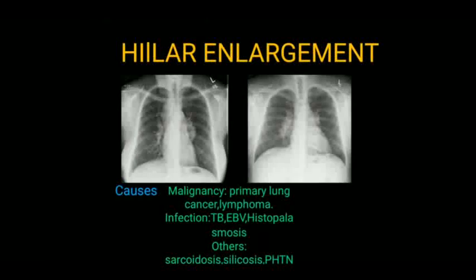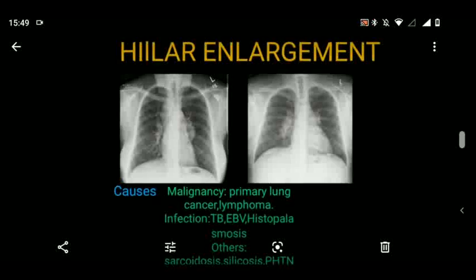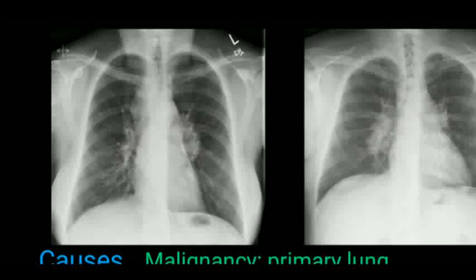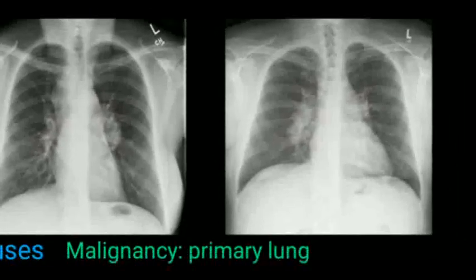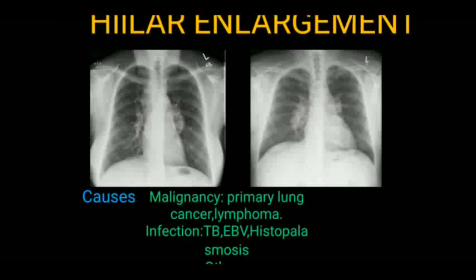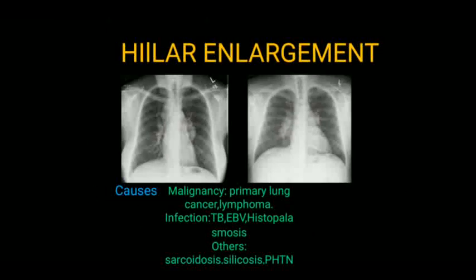The hilar region is the part where the lung and the bronchus connect. If there is enlargement present in the hilar area, it is seen as opacity. This is commonly seen in infections, and other causes include sarcoidosis, silicosis, pulmonary hypertension, and primary lung cancer. Hilar lymphadenopathy infections include TB, histoplasmosis. That is the end of today's class, thank you.